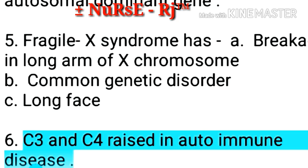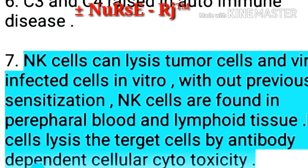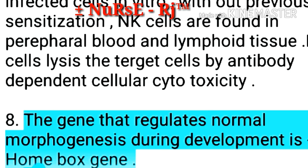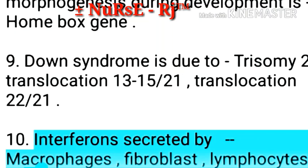Point 7: C3 and C4 are raised in auto-immune disease. Point 8: NK cells can lyse tumor cells and virus-infected cells in vitro without previous sensitization. NK cells are found in peripheral blood and lymphoid tissue. NK cells lyse target cells by antibody-dependent cellular cytotoxicity. Point 9: The gene that regulates normal morphogenesis during development is the homeobox gene.